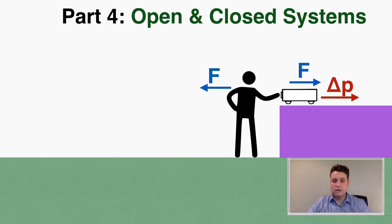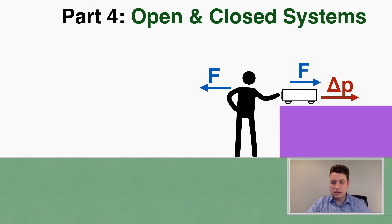But this actually isn't true. This is still an example of conservation of momentum, and I'm going to show you why. The cart puts a force on you, but you don't move. So there must be something else putting a force on you in the opposite direction, preventing you from moving — and that force is friction. Friction is keeping you stuck to the ground, preventing you from sliding away when you put a force on something else.